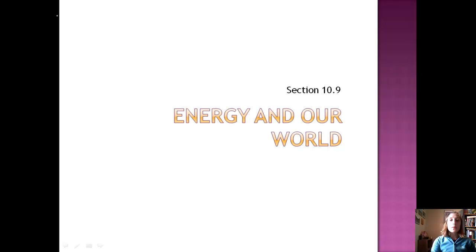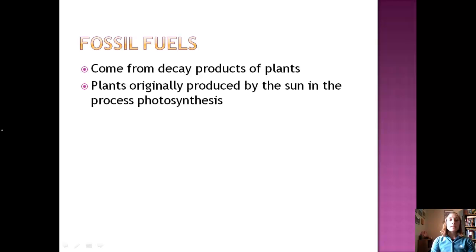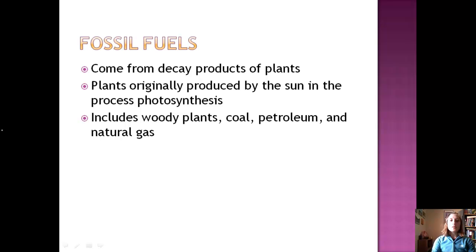Let's talk about Section 9, which is how energy relates to us. Here's some forms of energy that we use. Fossil fuels come from the decay products of plants. It takes a long time to produce these because all those plants have to be smushed under pressure and heat for a long time. Plants are originally produced by the sun in the process of photosynthesis, and so this includes woody plants, coal, petroleum, and natural gas.